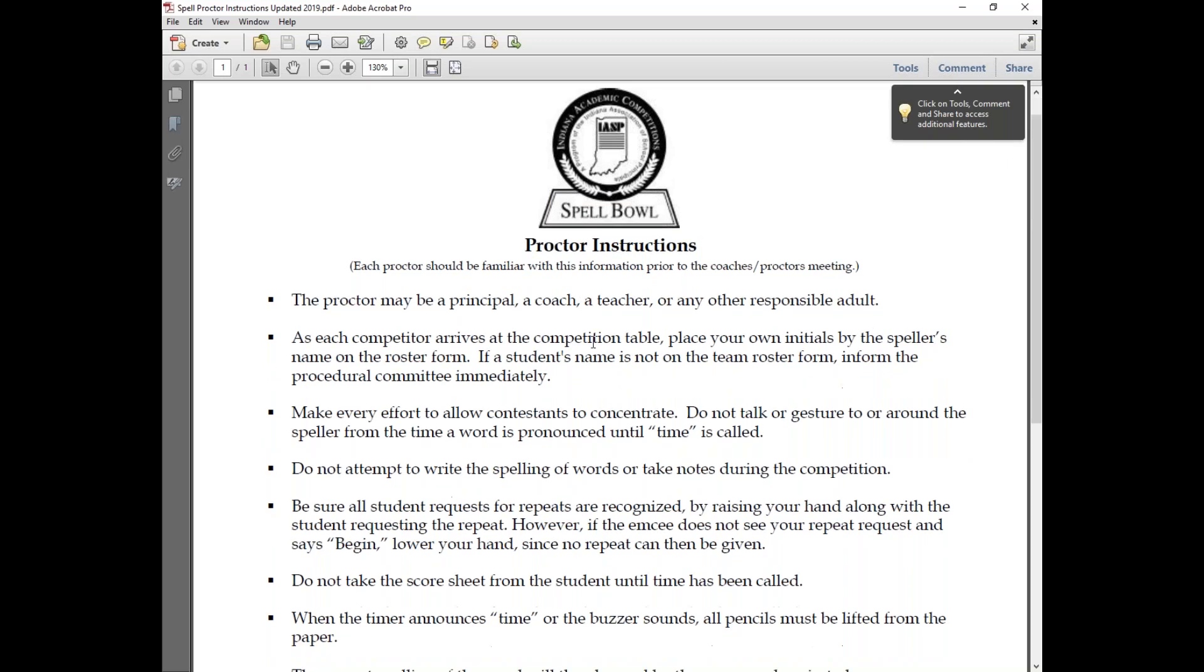The proctor may be a principal, a coach, teacher, or any other responsible adult. As each competitor arrives at the competition table, you put your initials by the speller's name on the roster form. If a student name is not on the team roster form, you need to let the procedural committee know so that person doesn't spell and then get disqualified. If you let the procedural committee know, you can make those changes ahead of time.